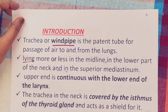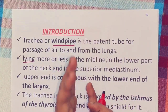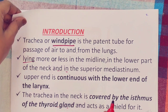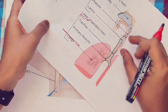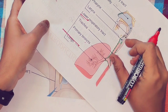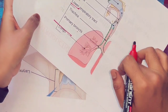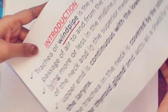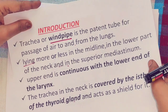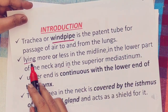The position of the trachea is in the midline, in the lower part of the neck and extending into the superior mediastinum. The mediastinum is the space between the two lungs. It is divided into the superior mediastinum and inferior mediastinum. The trachea lies in the midline within the superior mediastinum.